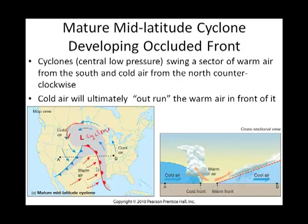We need an occluded front for the weather system to be what we say mature — a mature mid-latitude cyclone. This is showing you kind of edge-on. We've got other figures like this coming up. This is showing you between segment A and segment B, right here. So we see the cold air coming through, lifting up the warm air, and you can almost see where we're building up towards creating an occluded front, basically dropping down from that central low.